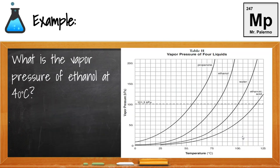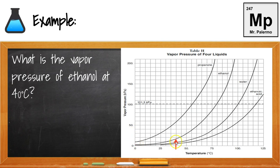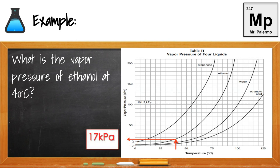How do we use table H? Here's an example question: What is the vapor pressure of ethanol at 40 degrees Celsius? First, find the ethanol line. Then locate 40 degrees Celsius. Note that the bottom axis goes by increments of 5, so each line goes by 5, but the vertical axis goes by 10 — don't make that mistake. Find 40 degrees Celsius, go up to the ethanol line, then go across to find the vapor pressure.